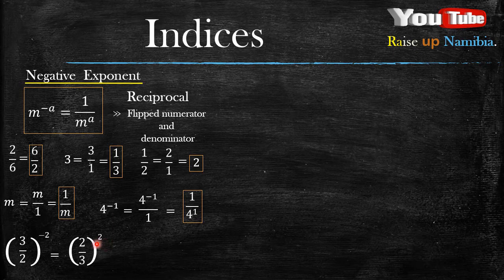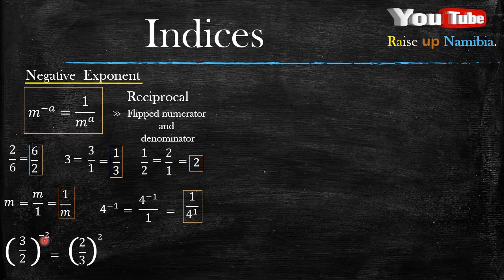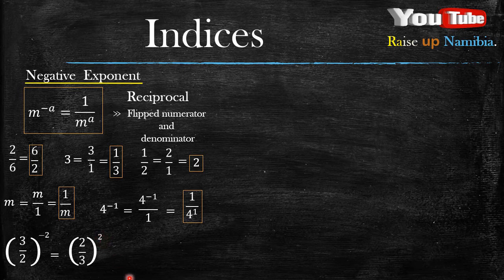So hopefully you got it, that each time you already have a fraction within brackets, and it's raised to a negative exponent, what you do is you find the reciprocal of that certain fraction, and then the exponent will automatically become a positive exponent.